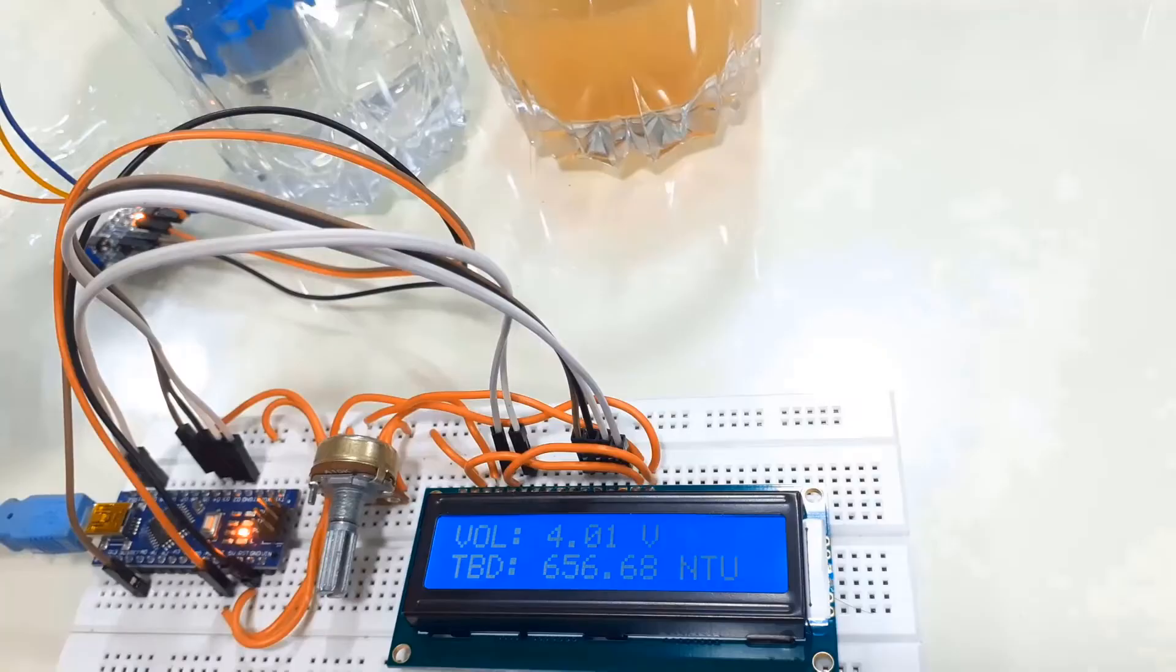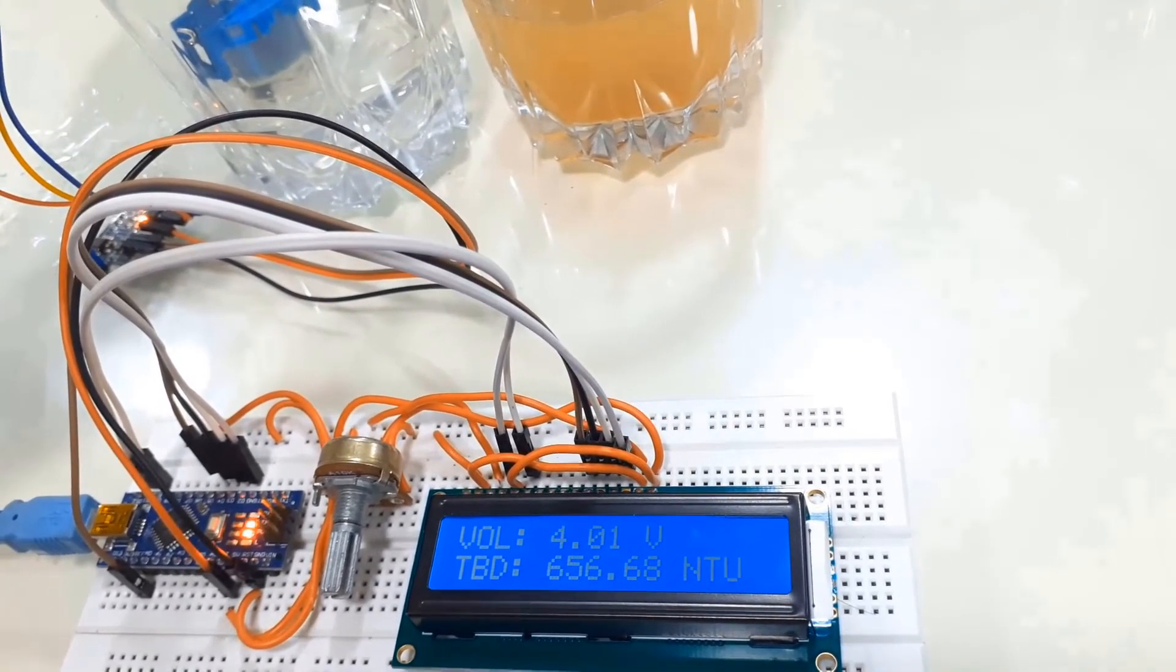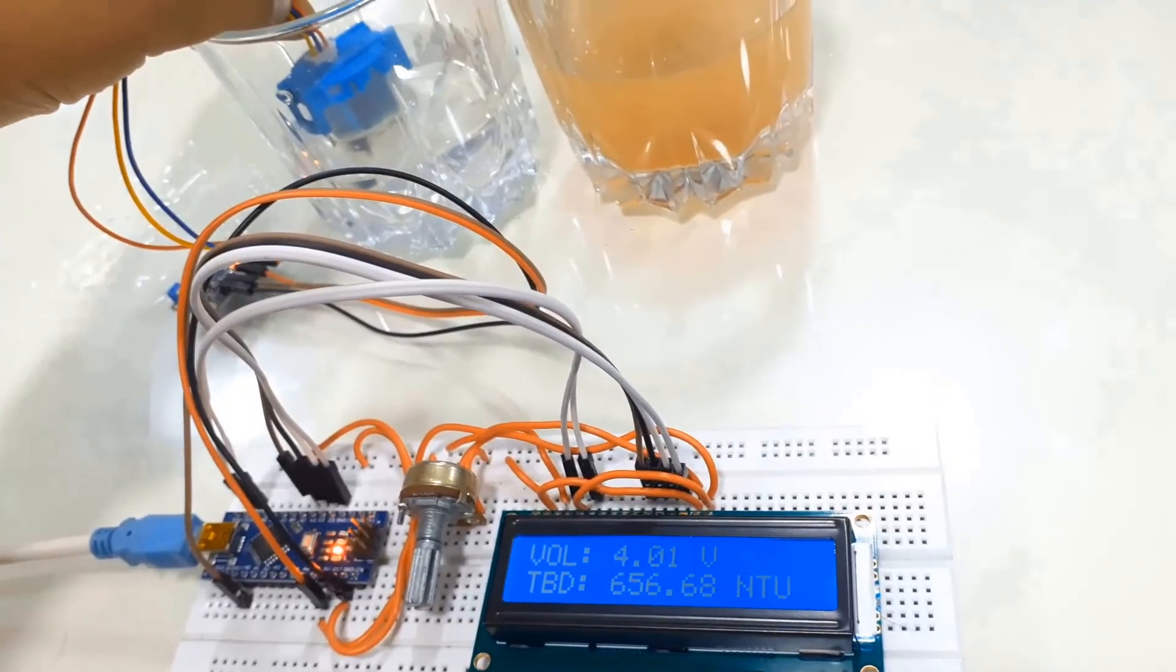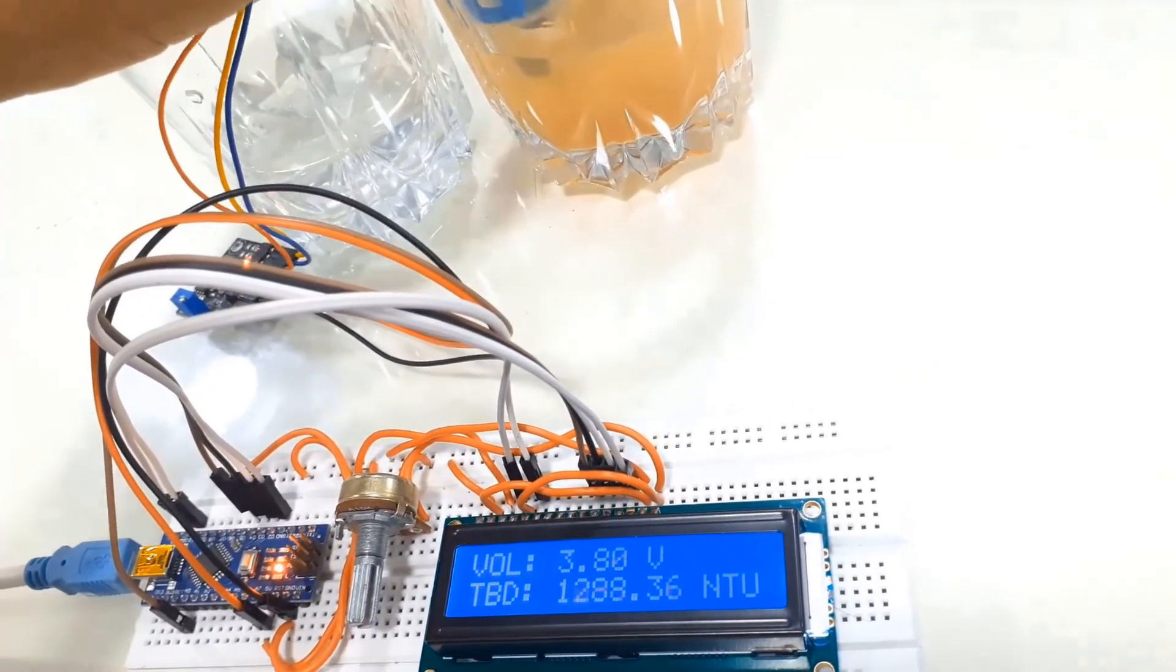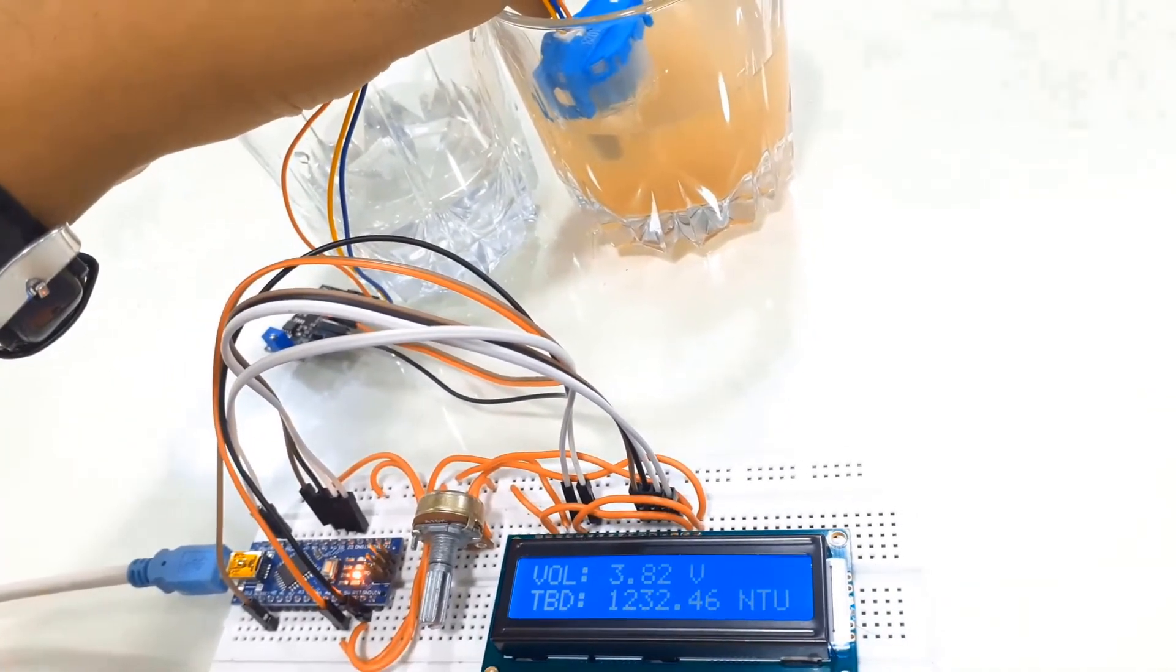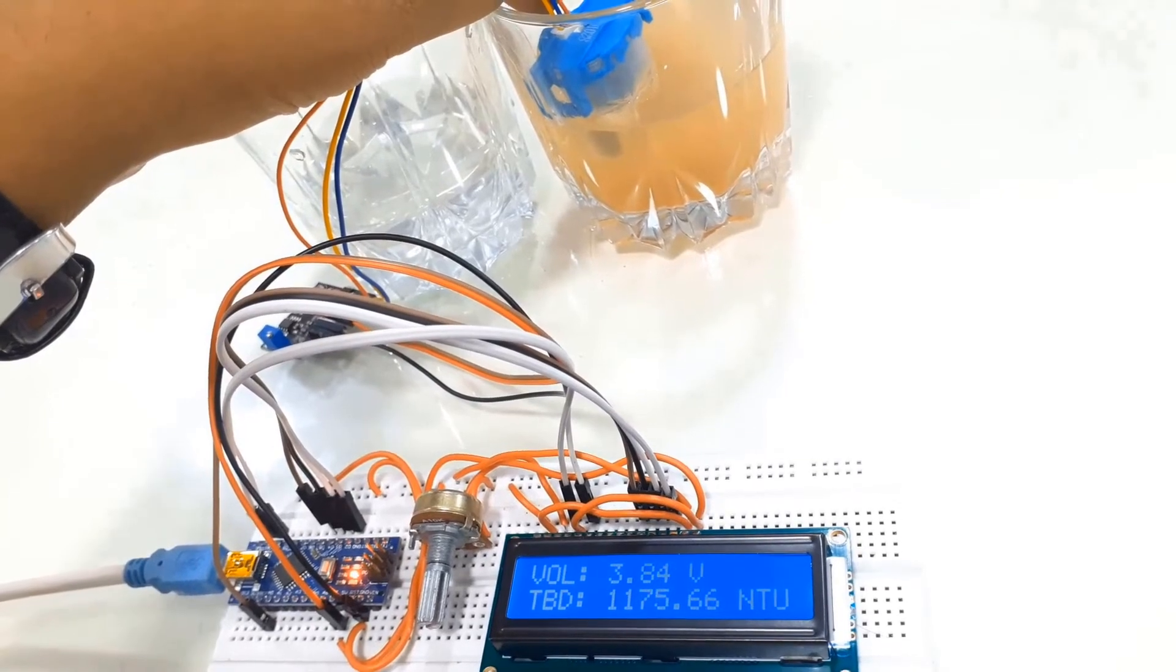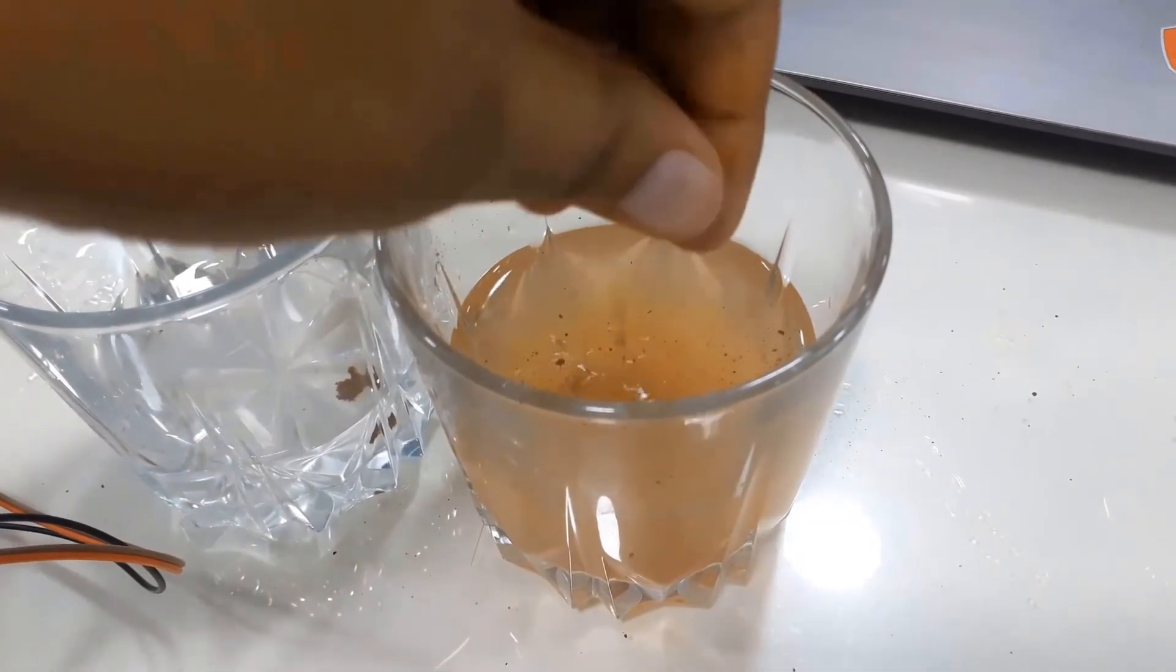When the sensor is dipped in clean water, the maximum voltage that I am getting is around 4V or a little bit high and the turbidity value is between 600 to 700 NTU. Now, when the same sensor is dipped in muddy water, the turbidity value is raised more than 1200 NTU. Now, let me add some mud to the water and increase the cloudiness of water.